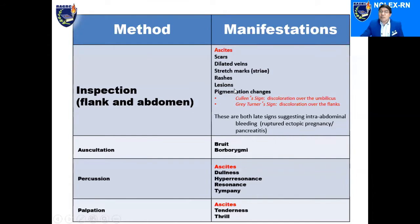Cullen's sign is usually associated with ruptured ectopic pregnancy or pancreatitis, presenting as a bluish or purplish discoloration around the umbilical area. When you have the same bluish or purplish discoloration over the flanks, it is called Gray-Turner sign. So: Cullen's sign on the umbilicus, Gray-Turner sign over the flanks. These are both late signs suggesting intra-abdominal bleeding, ruptured ectopic pregnancy, or pancreatitis.